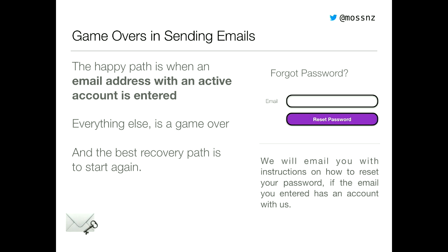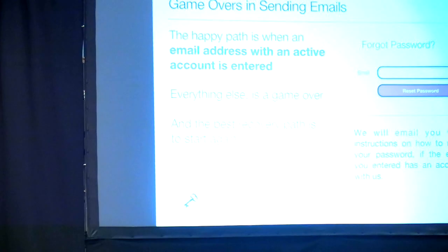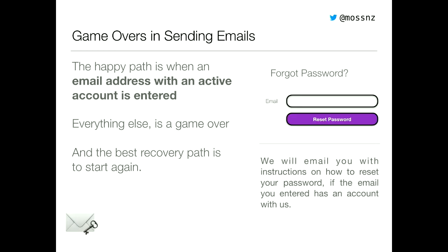The first game over screen is 'we will email you.' The interesting thing about this is that we can actually just show a single page for every case that comes through sending an email. In the very happy path, we send off an email to somebody with an active account. In everything else, we don't actually send an email, and the best recovery path is to start again. So it's perfectly okay to say in every case: we will email you with instructions on how to reset your password if the email you entered has an account with us. Because as we went through the flow, you read this and then go straight to your inbox and wait for an email to arrive. You may also want a few other little errors — maybe a simple email validation, or an error page saying we can't send emails at the moment, please try again later.